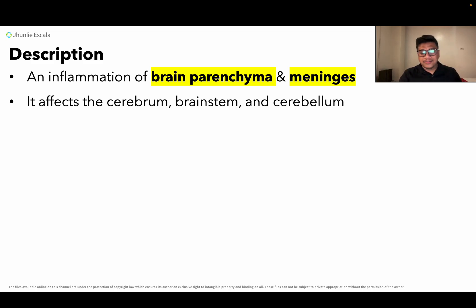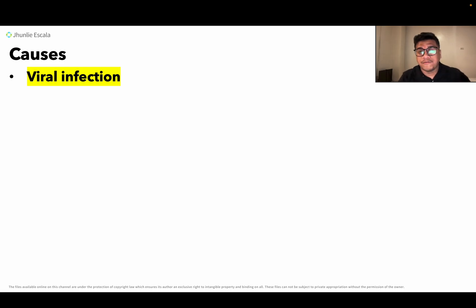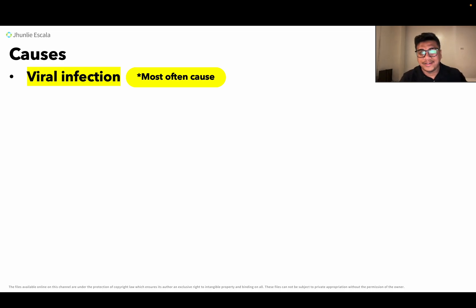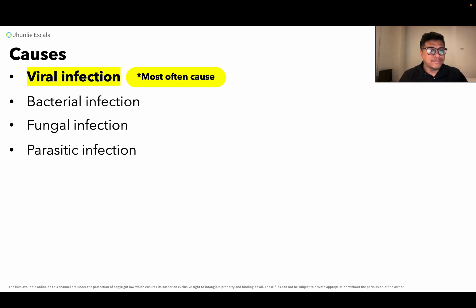Now let's talk about the causes — why this inflammation occurs. First, viral infection is the most common cause of encephalitis, so you need to write this down. Bacterial infection, fungal infection, and parasitic infection may also be causes, but viral infection remains the most often cited cause.